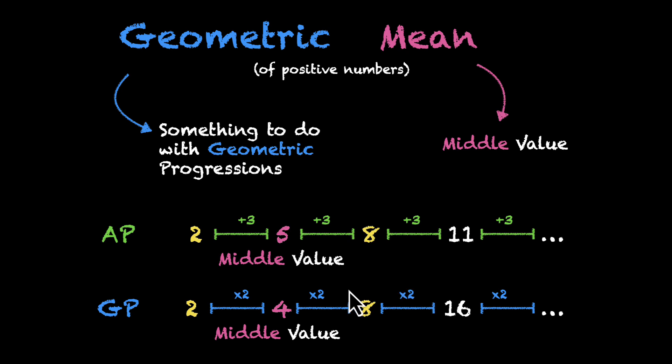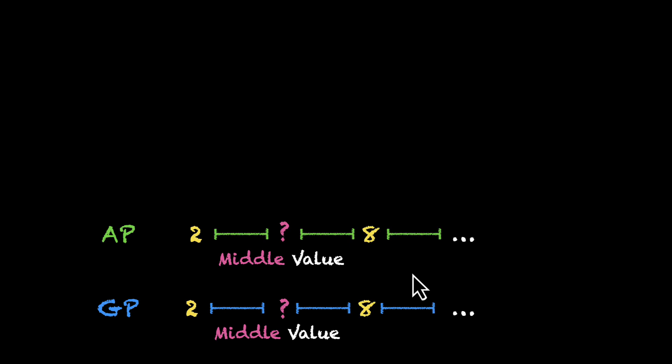And I know what you're thinking. It is very easy to pick the middle value when you have the entire progression listed. But what if the values get lost? What if you're only given 2 values and you have to figure out the middle value for both AP and GP? If they get lost, how do we find them?